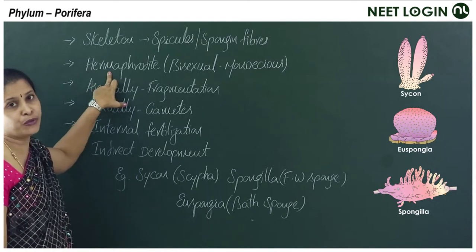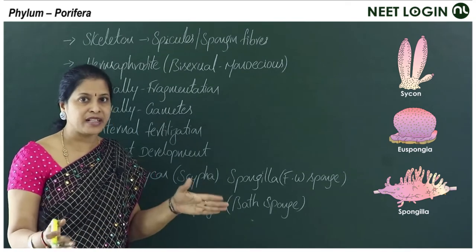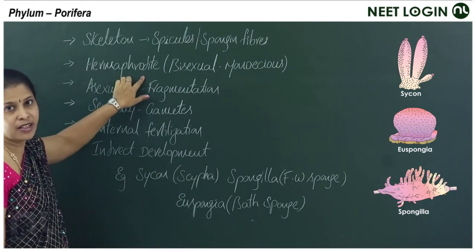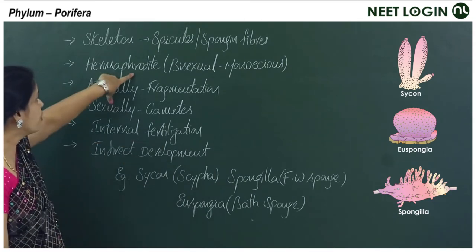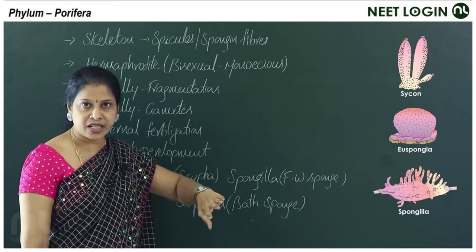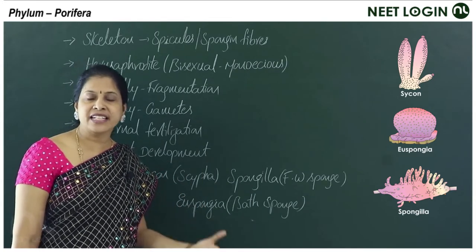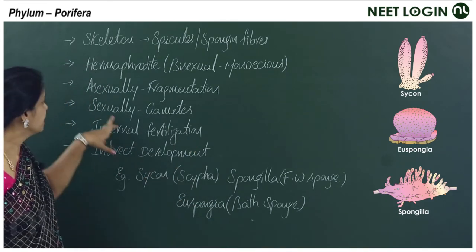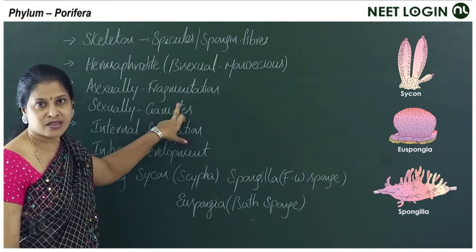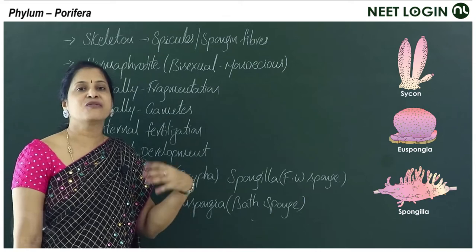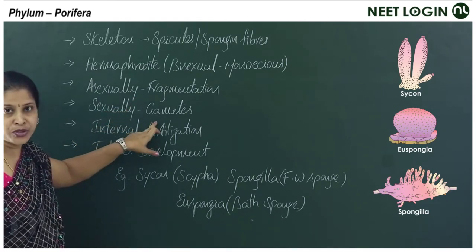Poriferans are hermaphrodites — the sexes are united, not separate. They are also called bisexual or monoecious. They can produce both male and female gametes. Asexual reproduction occurs by fragmentation — if a sponge breaks into pieces, each piece develops into a new sponge. Sexually, they reproduce by producing gametes.